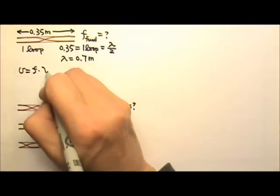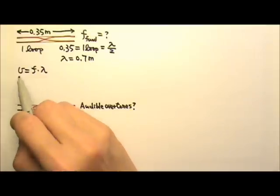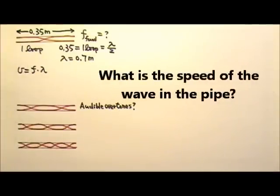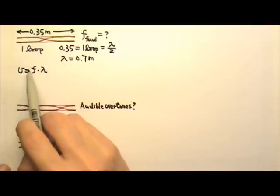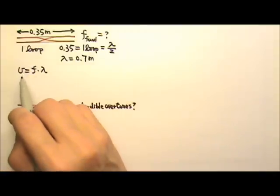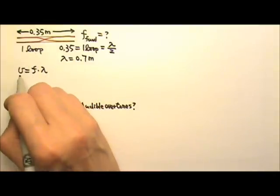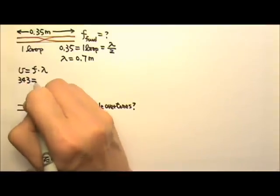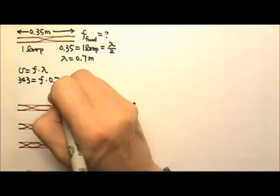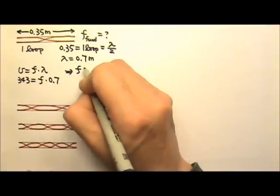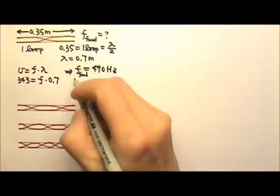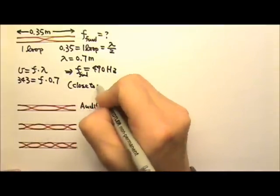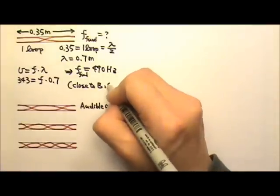V equals frequency times wavelength. The speed of the wave in the pipe is the speed of sound in air. If a problem doesn't specify the temperature, we use 20 degrees Celsius, which means the speed of sound in air is 343 meters per second. We're looking for the frequency and we know the wavelength is 0.7, so this gives us a frequency of 490 hertz. This is the fundamental frequency, and it is close to that B above middle C, which is 494 hertz.